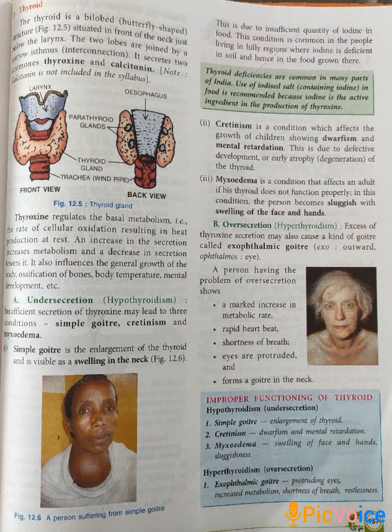The symptoms of exophthalmic goiter include a marked increase in metabolic rate — metabolism becomes very fast. Because metabolism increases, the heart beat also becomes rapid and there is shortness of breath. The eyes are also protruded outward.